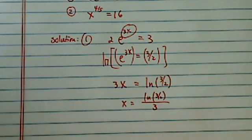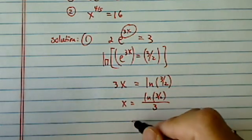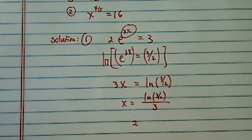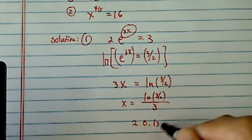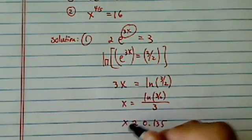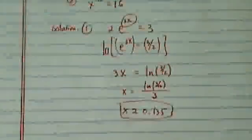So natural log of 3 over 2, let's take a look. So 3 over 2, which is really 1.5. Let's take natural log of that, and I have 0.4, and then divided by 3. Then I have 0.135. That's my approximate answer.